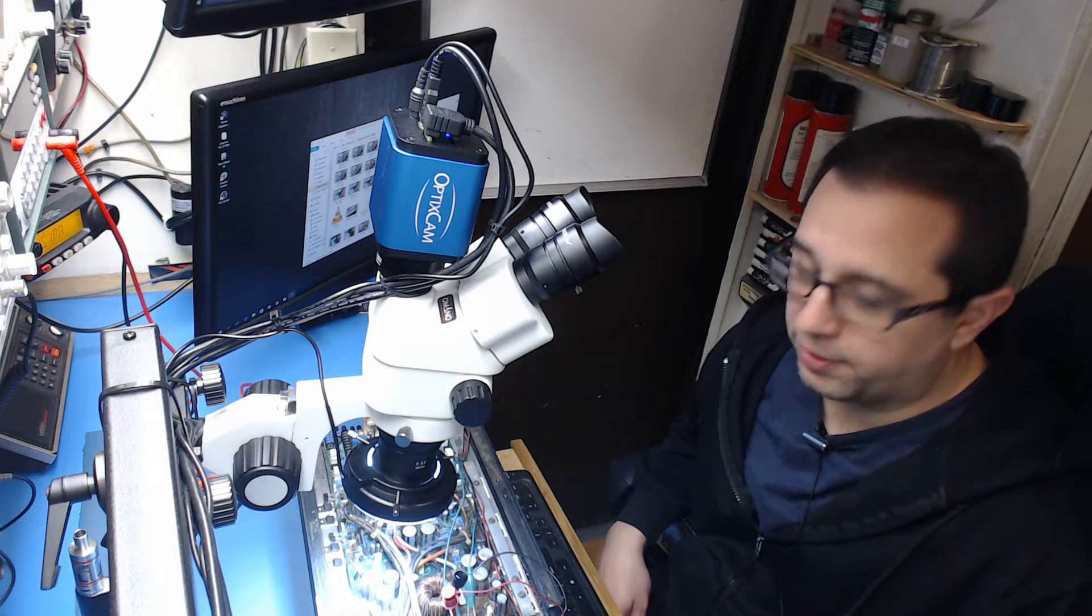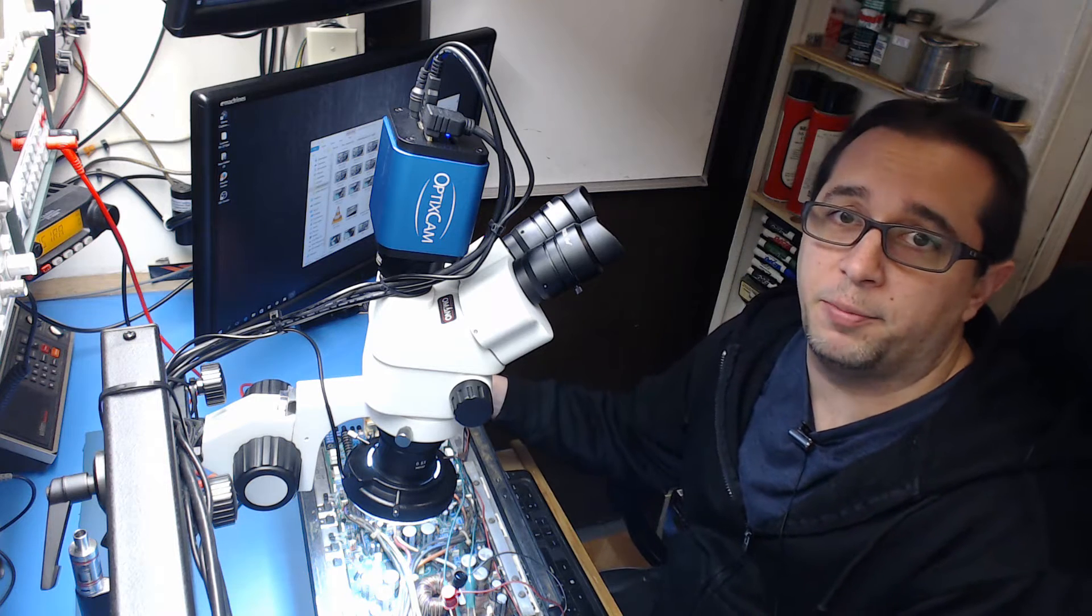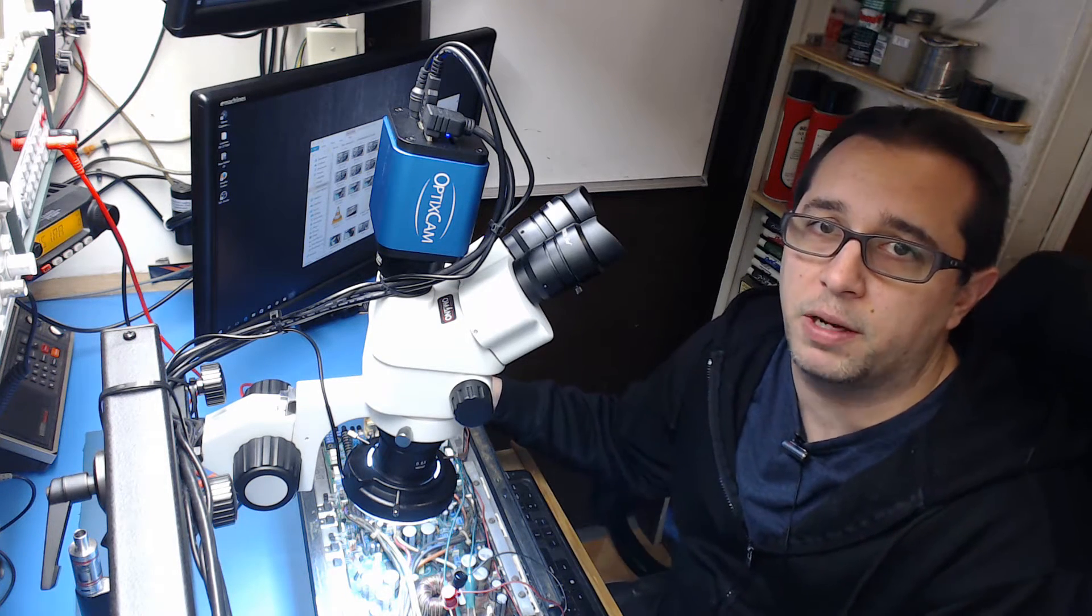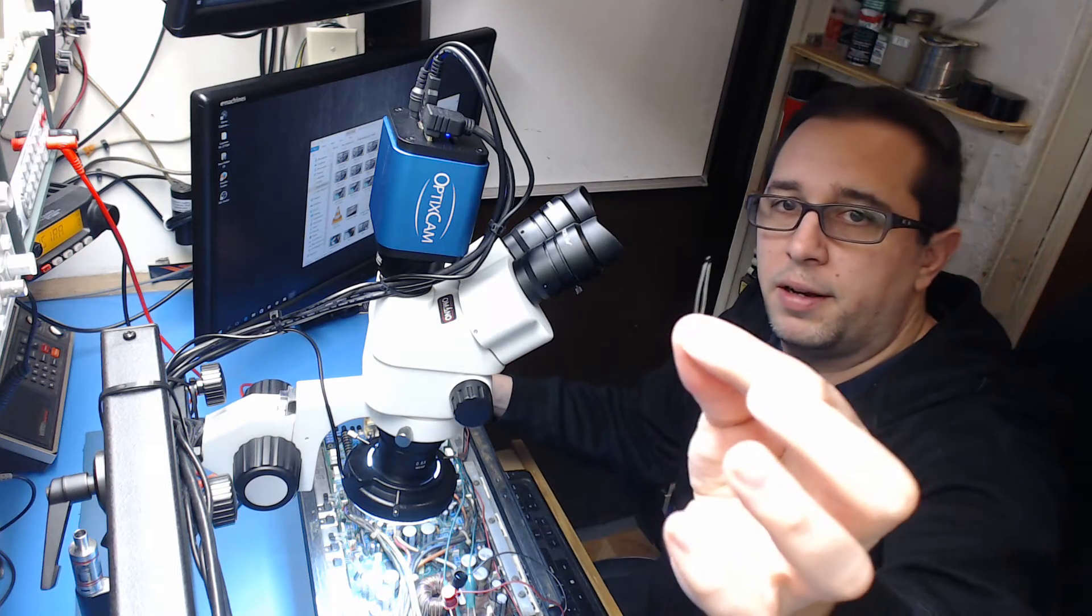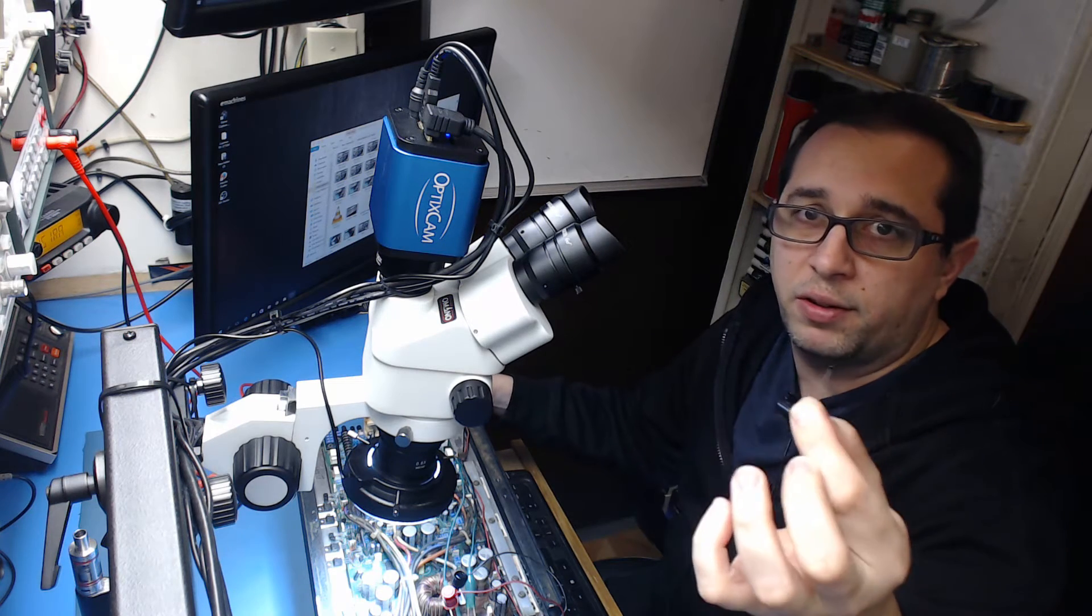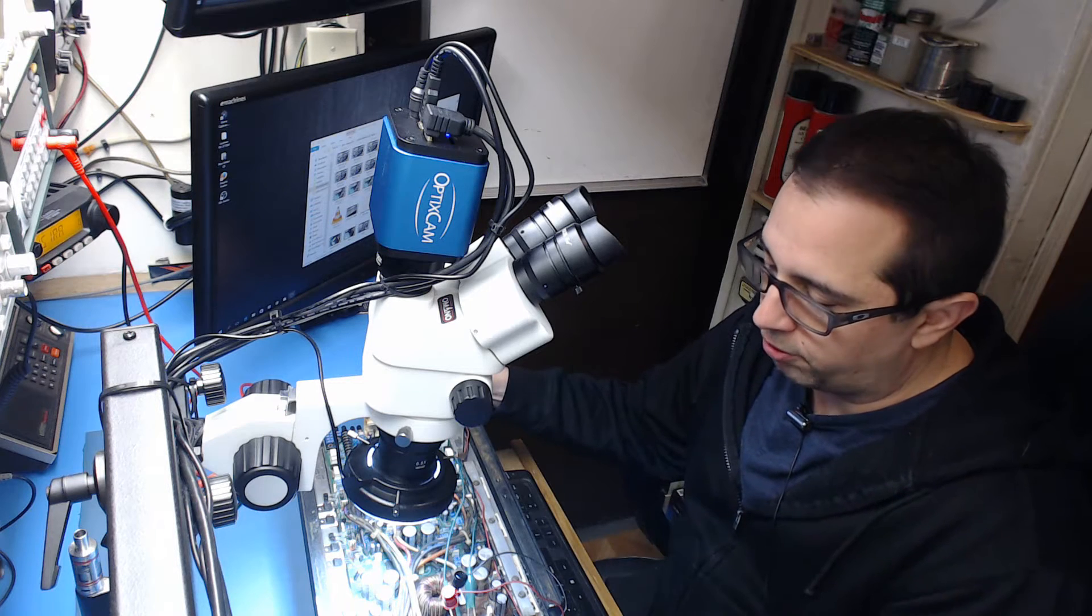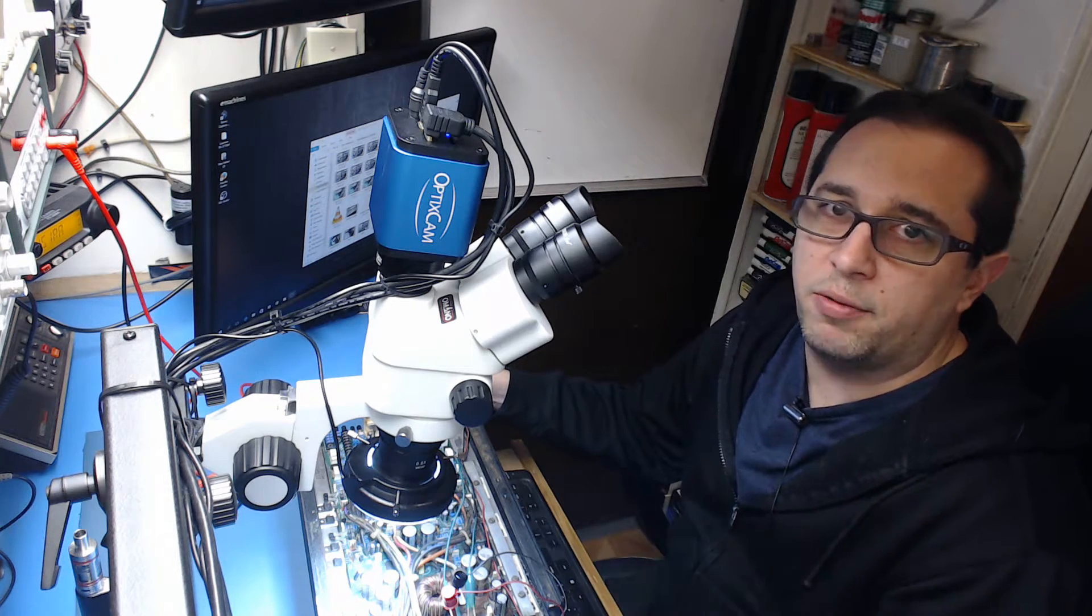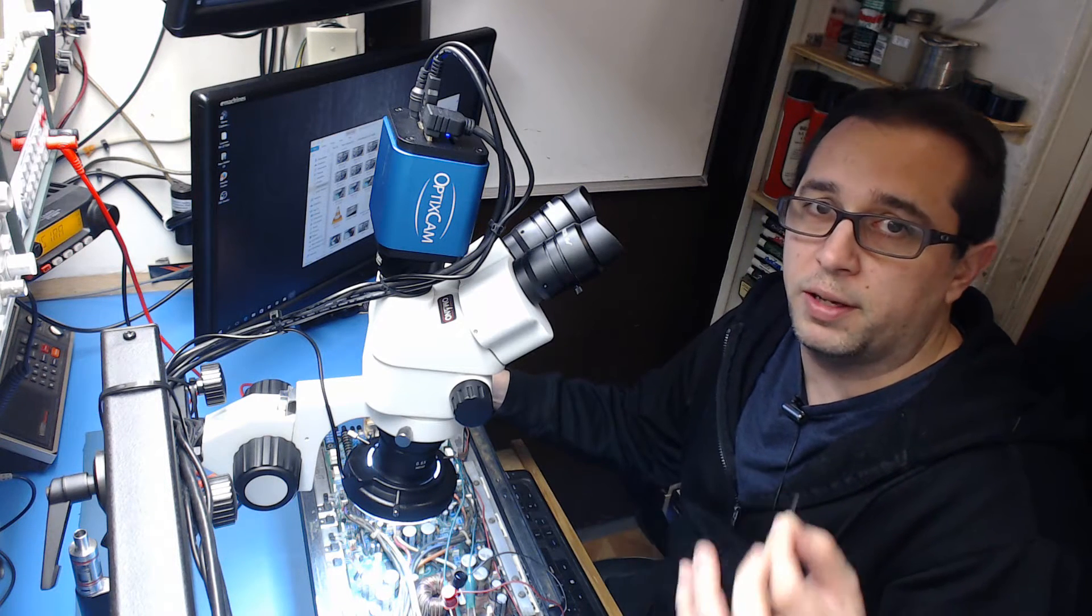All right, so tonight I'm going to be trying to change a thermistor on the amplifier. We identified it as being a problem on this MTX4300X, and all it is is this little tiny device. What it does is it changes resistance with temperature. It's a 10k thermistor, so as the temperature decreases the resistance will increase or decrease.